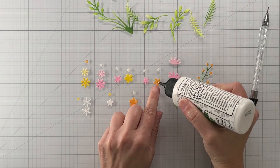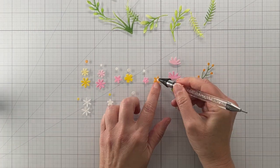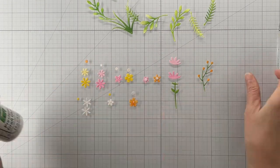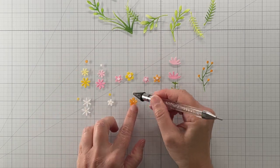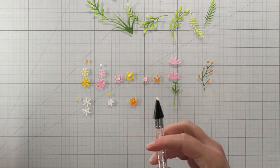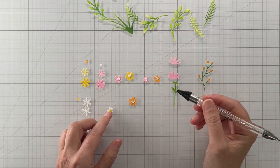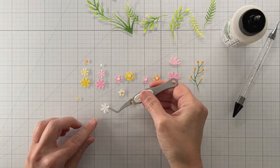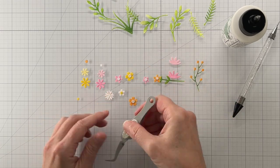But I'm just going to show you when I have a lot of little flower elements to assemble I kind of just make an assembly line and then it's really quick to assemble them all.